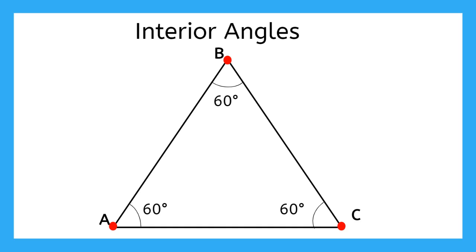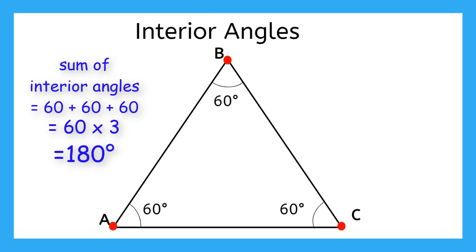For example, in an equilateral triangle, all of the angles are the same. And if we add them all up, we get 60 plus 60 plus 60, which is the same as 60 times 3, which is 180 degrees.